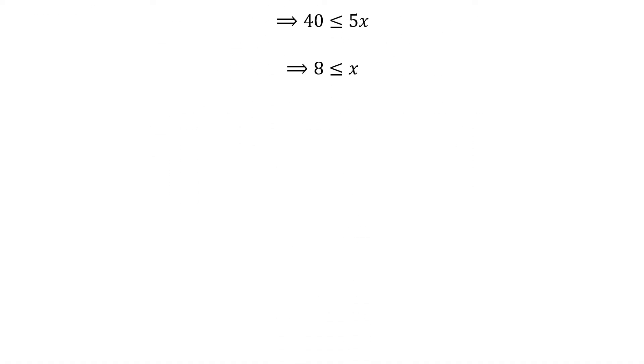Dividing both sides of an inequality by a positive number does not change the inequality. So let us divide the above inequality by 5. We are left with 8 is less than or equal to x.